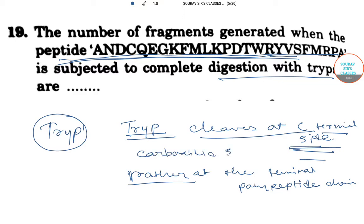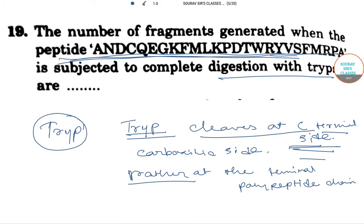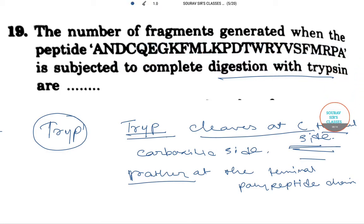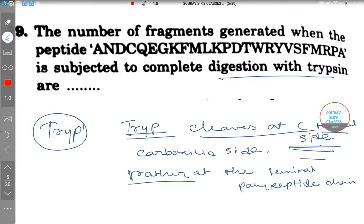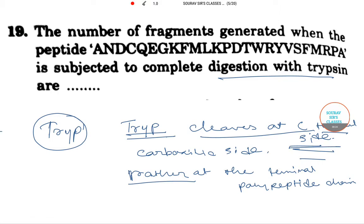Now if we look into the fragment that we have, let me just first clean the screen so that I can make you understand. So now this is our fragment and I am just choosing red color. Now at the C-terminal point, when the peptides have this fragment, there will be a fragment.